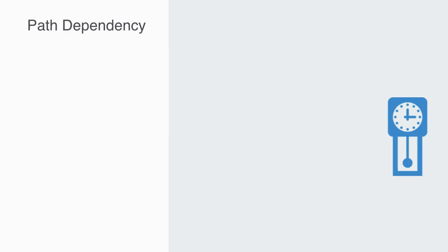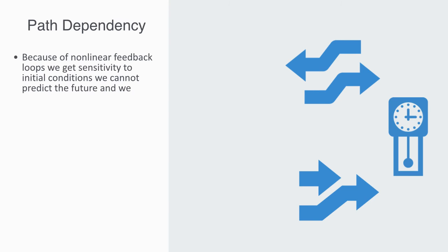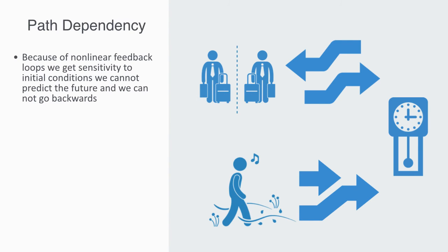Whereas closed linear systems are time reversible and predictable, the development of non-linear systems is not. Because of non-linear feedback loops, we get sensitivity to initial conditions. We can't predict the future and we can't go backwards, meaning time only goes in one way. We find ourselves on a particular path because of what happened in the past. The fact that we can't go back and change it means we get path dependency, and history matters.